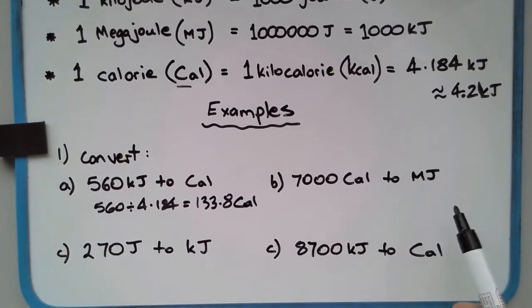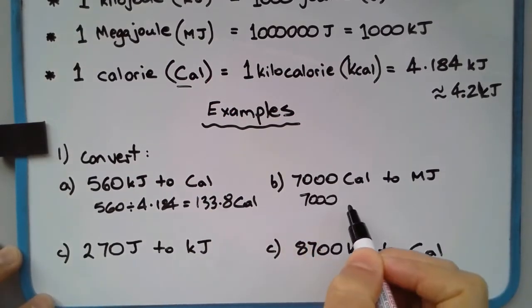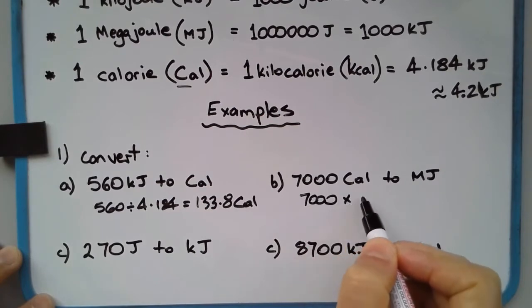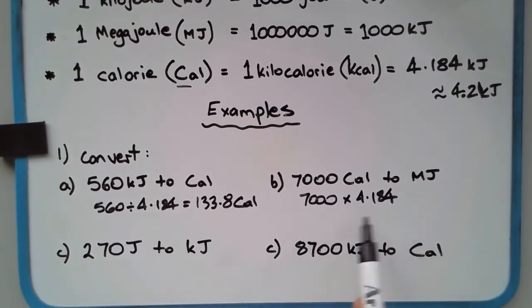Converting 7000 calories to megajoules. We'll do this in two steps: convert calories to kilojoules first, then kilojoules to megajoules. So 7000 calories, instead of dividing by 4.184, we're going to multiply by 4.184, which gives us the kilojoules.